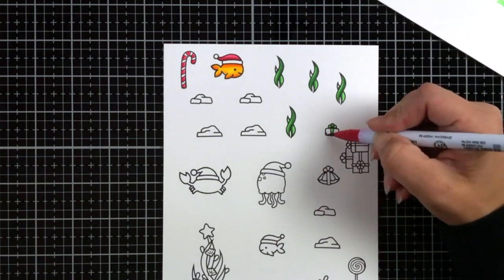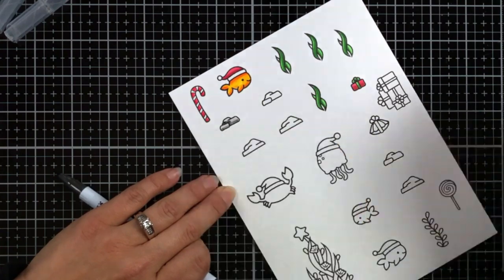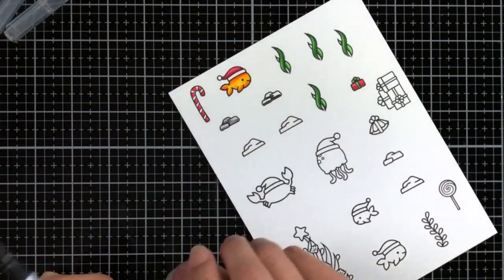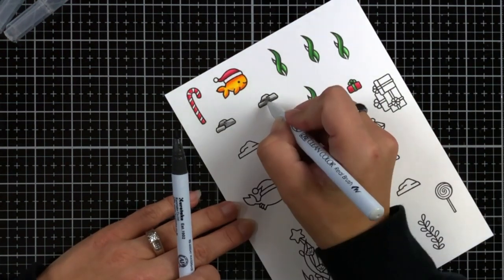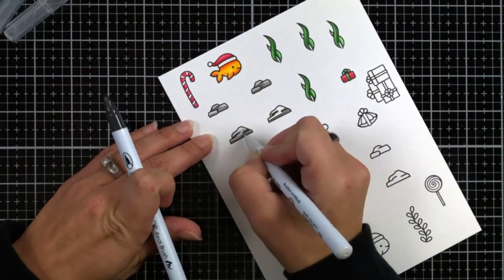In coloring with my Zig Markers, what I had found in my experimenting was finding two colors to do a blend was the best thing. And I wanted a really dark color and then a really light color.